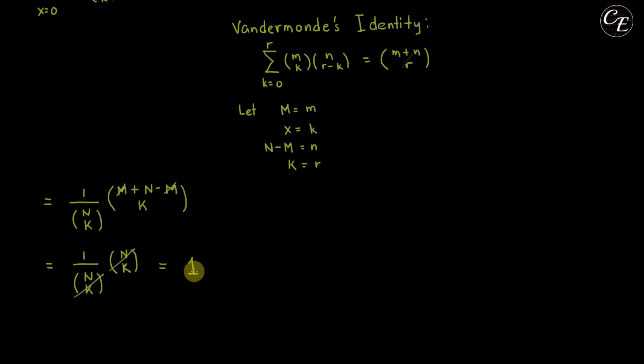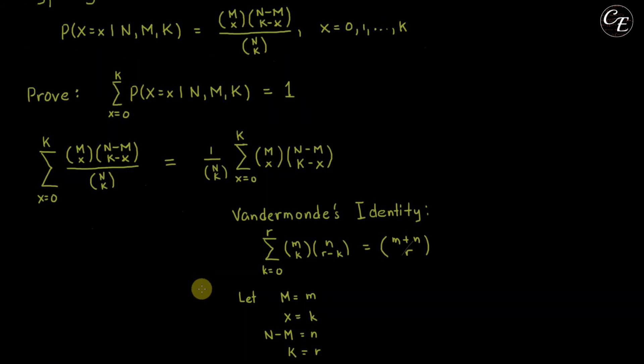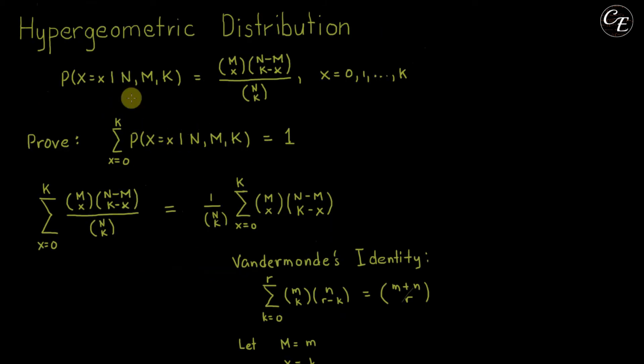We're left with 1. So this completes our proof that the summation of the probability mass function of the hypergeometric distribution is equal to 1.